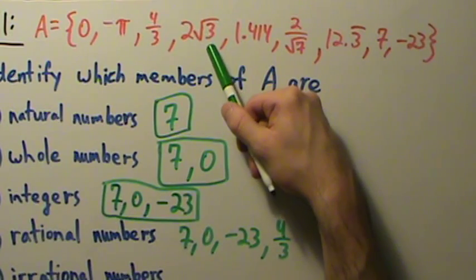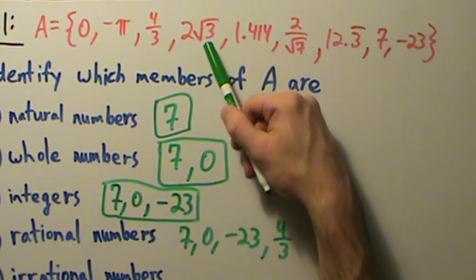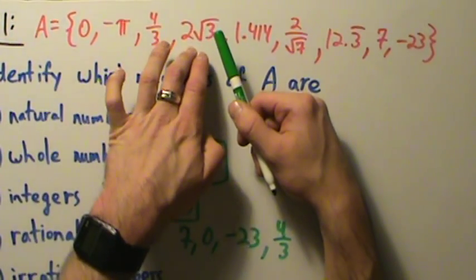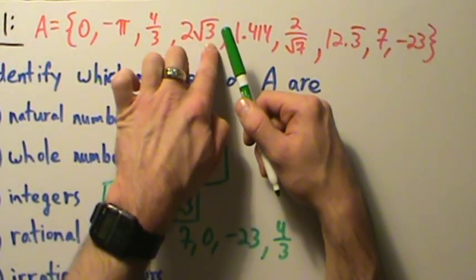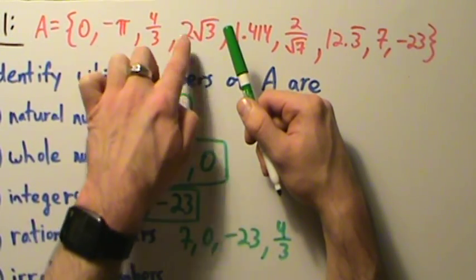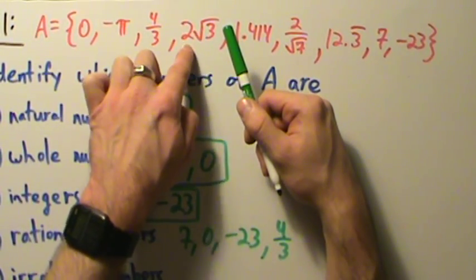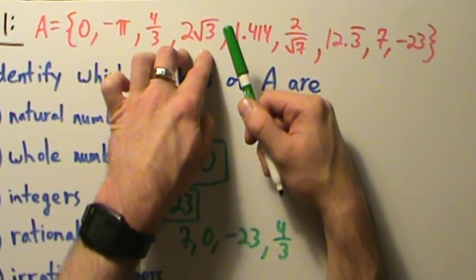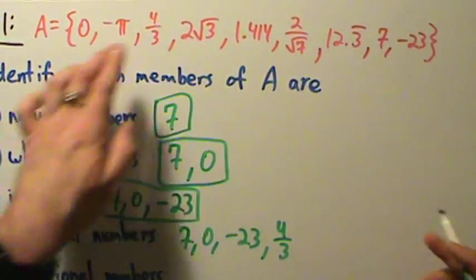Two root three? No, because root three is irrational, so if you multiply that by two, you're still going to have an irrational number. That's actually a property of irrational numbers: if you multiply an irrational number by a rational number — two is rational — you still get irrational. So two root three is still irrational.